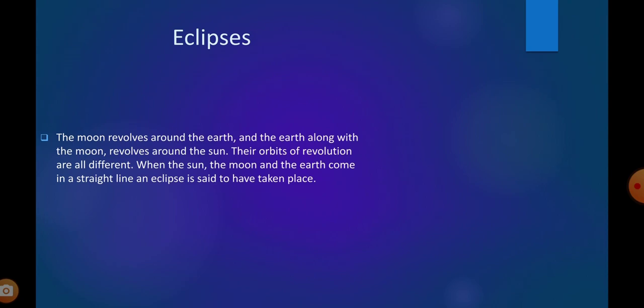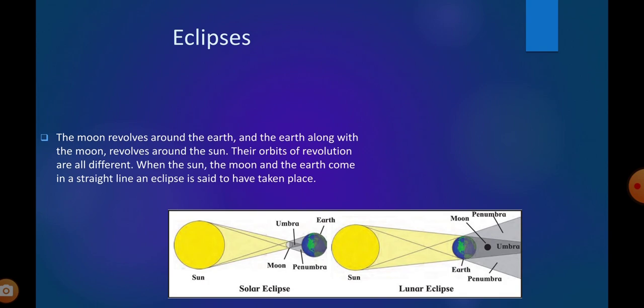The moon revolves around the earth and the earth along with the moon revolves around the sun. Their orbits of revolution are all different. When the sun, the moon, and the earth come in a straight line, an eclipse is said to have taken place. You know that we all are part of the solar system. Earth is rotating and revolving around the sun as well as moon also. So when these three, earth, sun and moon, come in a straight line, eclipse happens.